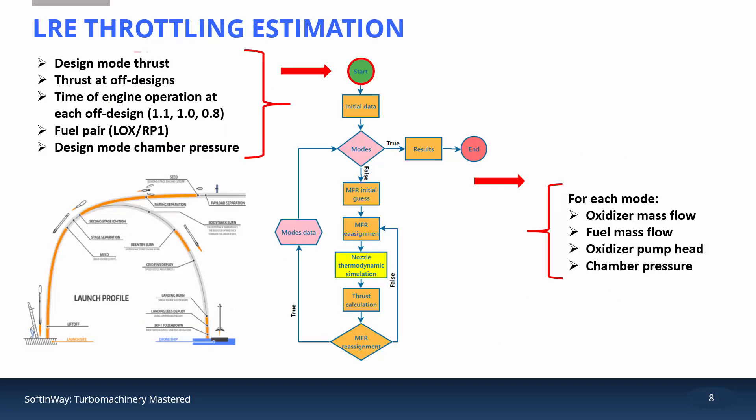The initial data for the turbopump design includes desired thrust levels and the weight coefficients for each mode of operation, and is provided by the ballistic department beforehand. It is assumed that the chamber pressure, nozzle exit pressure, and fuel pair are assigned in advance, but these could also be determined if desired. Three off-design modes are considered here.